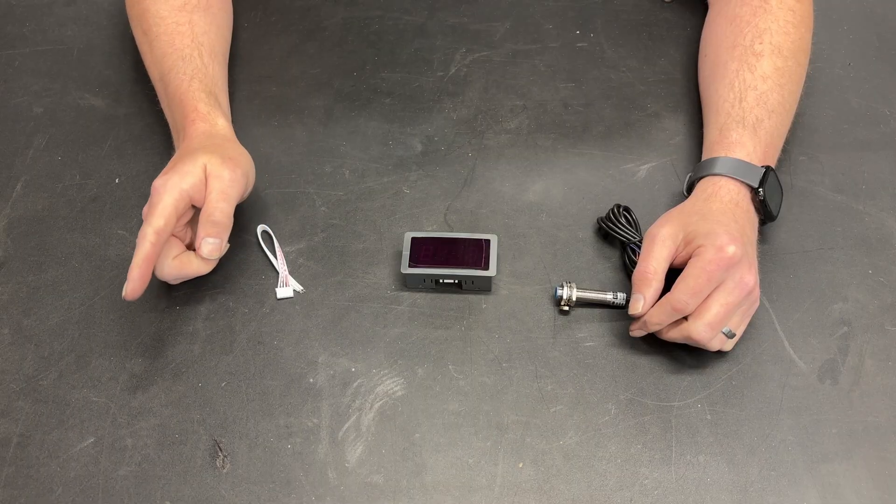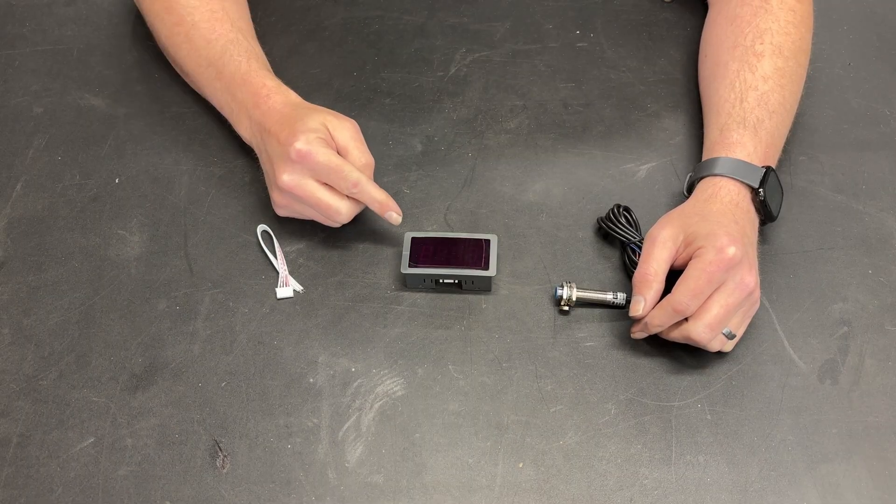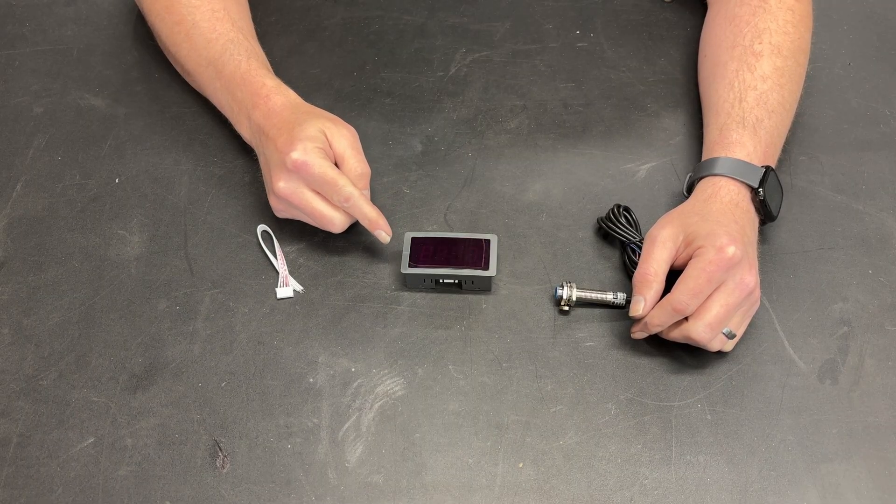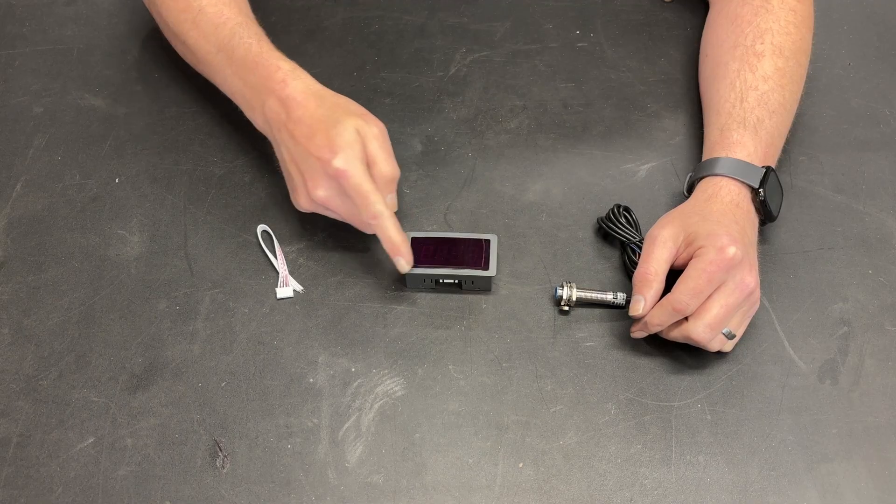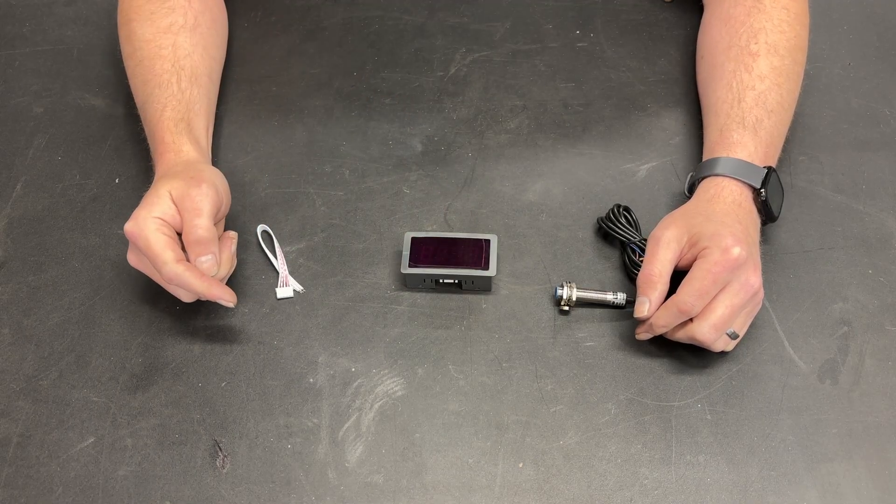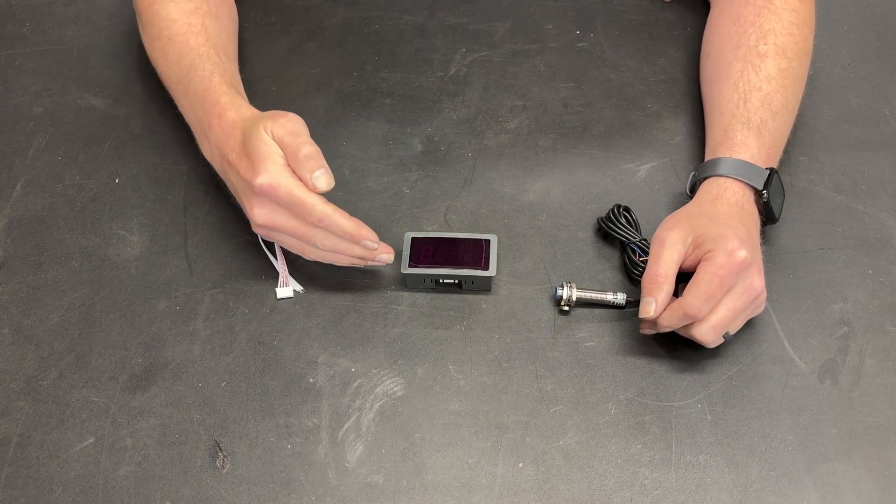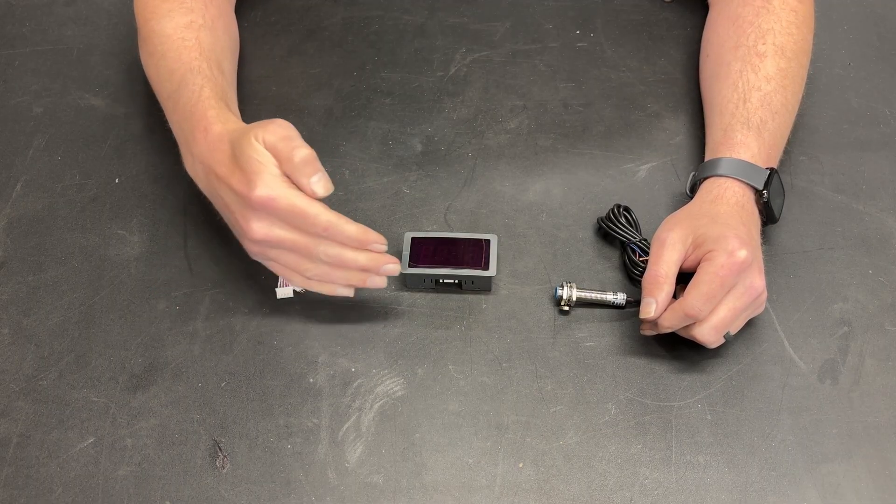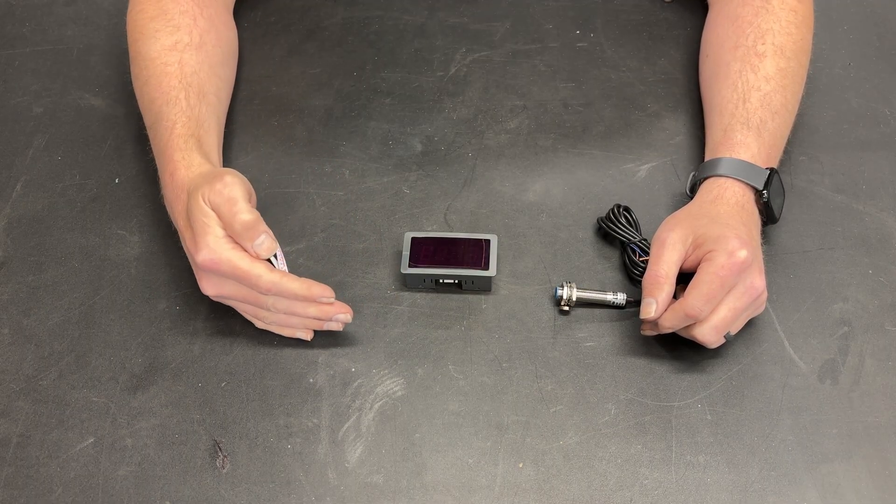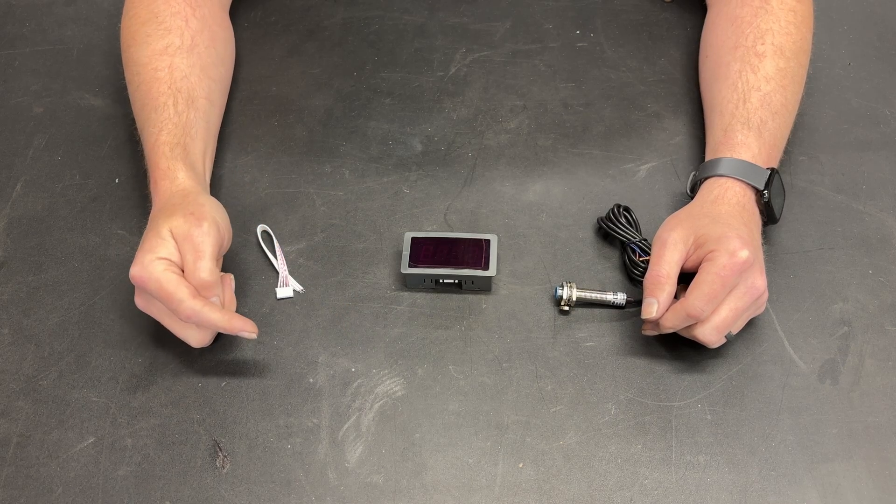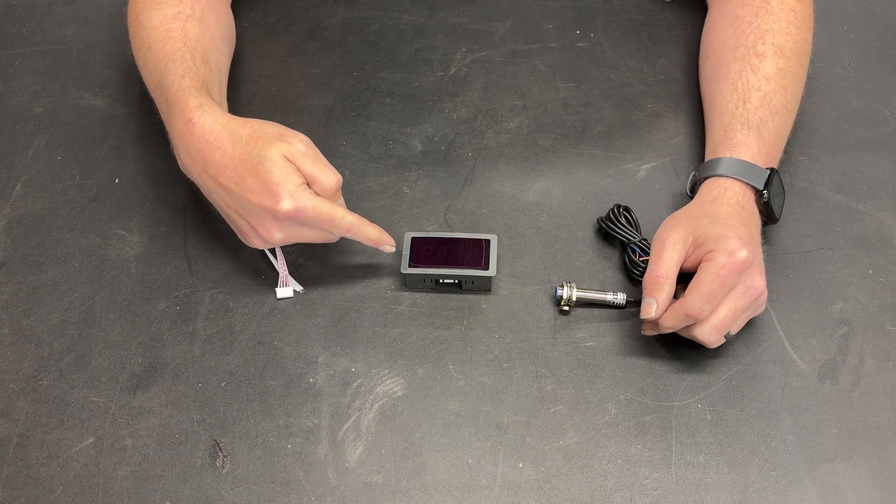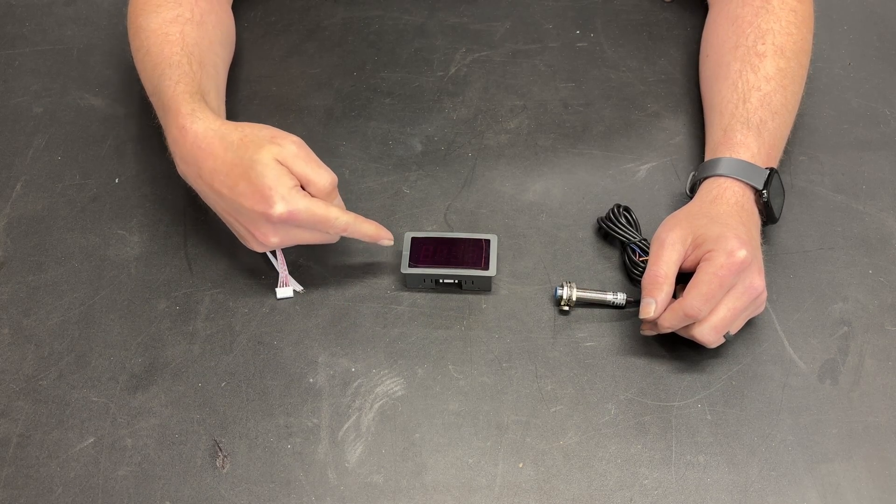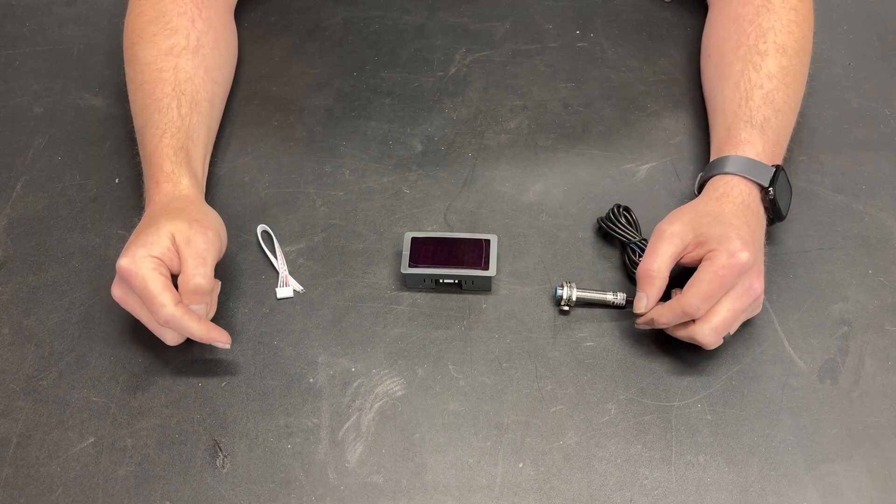And interestingly enough, I found that the AC powered unit had more lag than the DC powered unit. And I don't know why that is. In other words, if I turned my knob on my variable power supply, increased the speed or decreased the speed, it took longer for the AC RPM meter to catch up than it did for the DC RPM meter to catch up.